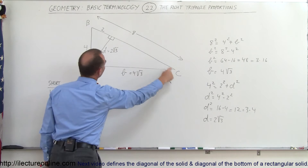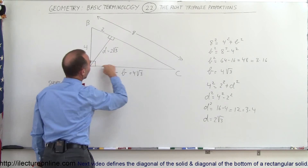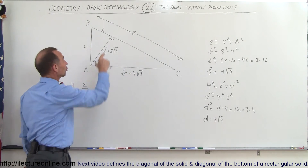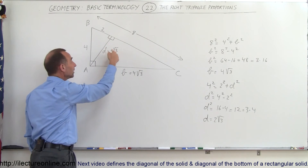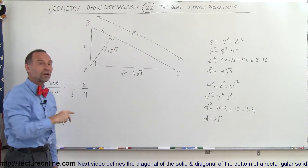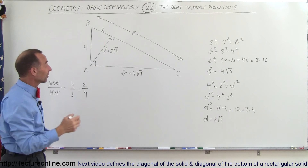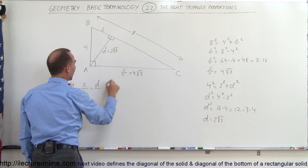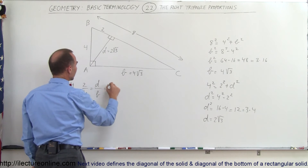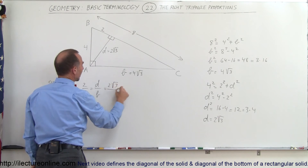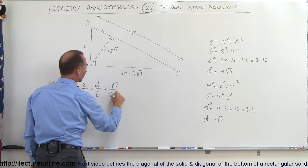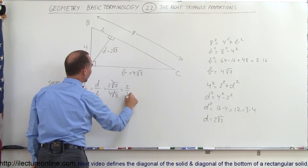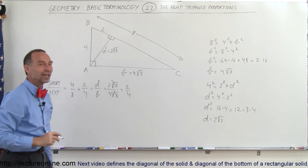So now we have this triangle right here — we have the hypotenuse and we have the short side. The ratio of the short side to the hypotenuse should also be the same as the ratio for the other two triangles. Let's try it. The short side here is D, the hypotenuse is B. D is 2 times the square root of 3, and the hypotenuse is 4 times the square root of 3. When that cancels out, that's equal to 2 divided by 4, and you can see that's again the same ratio.